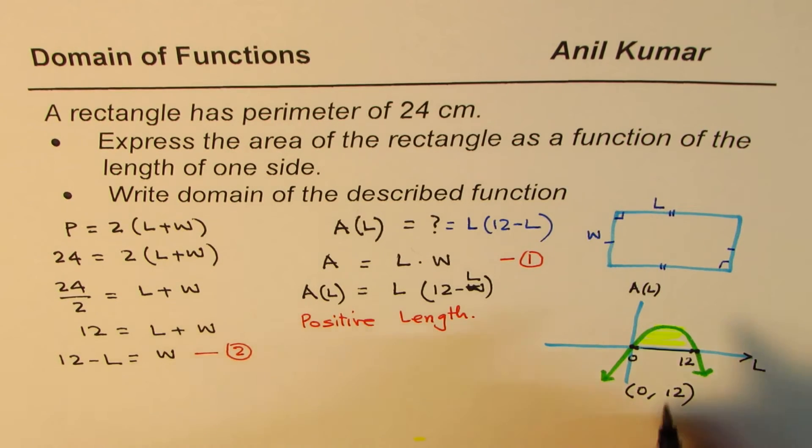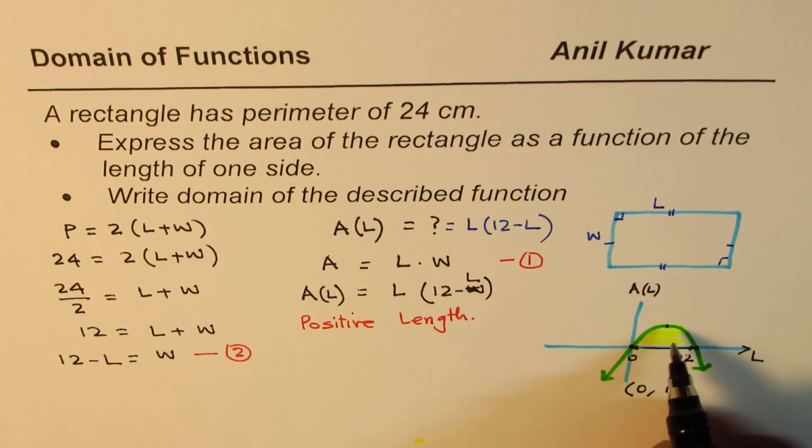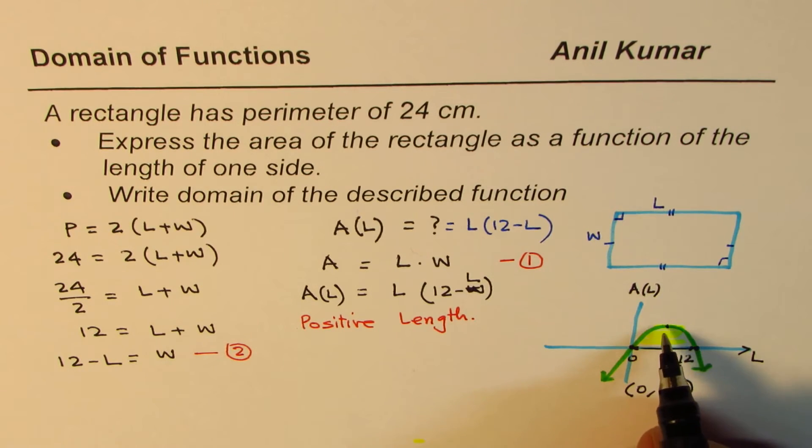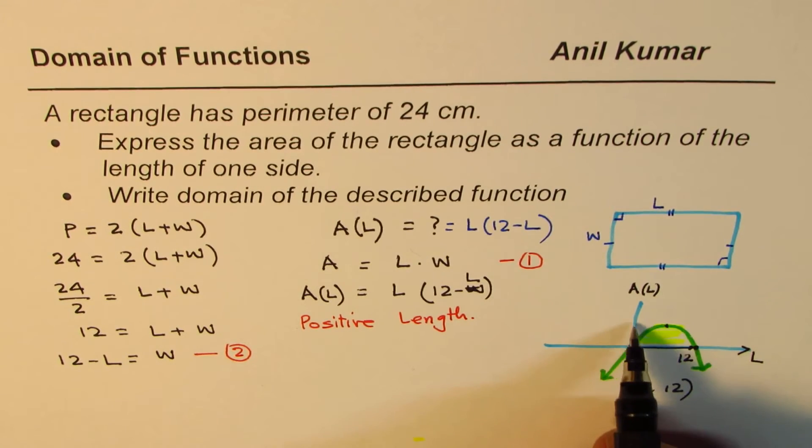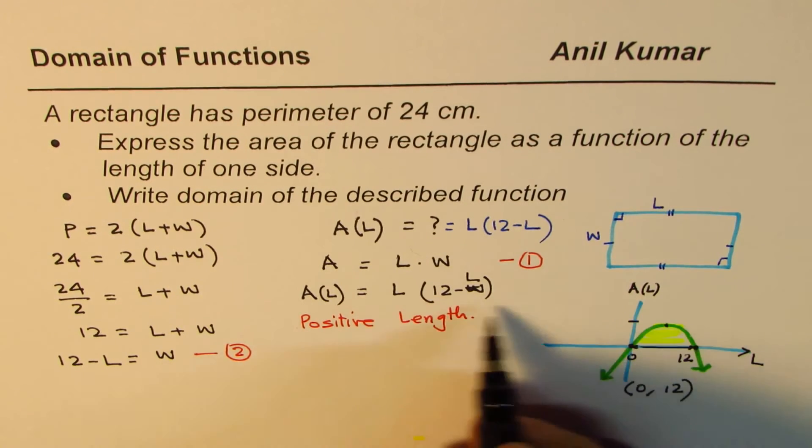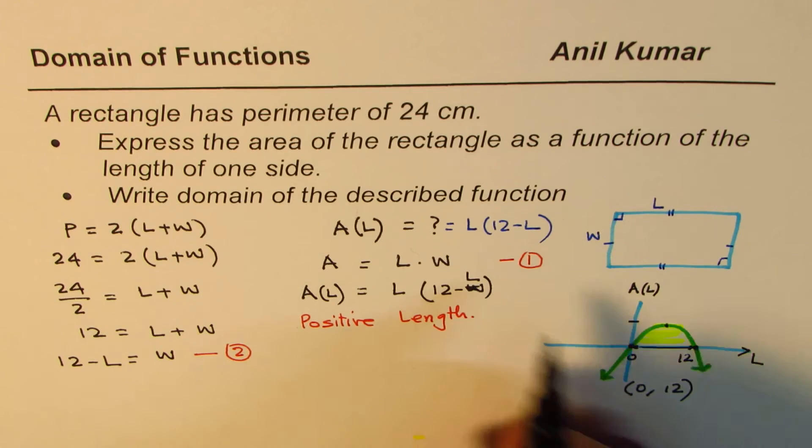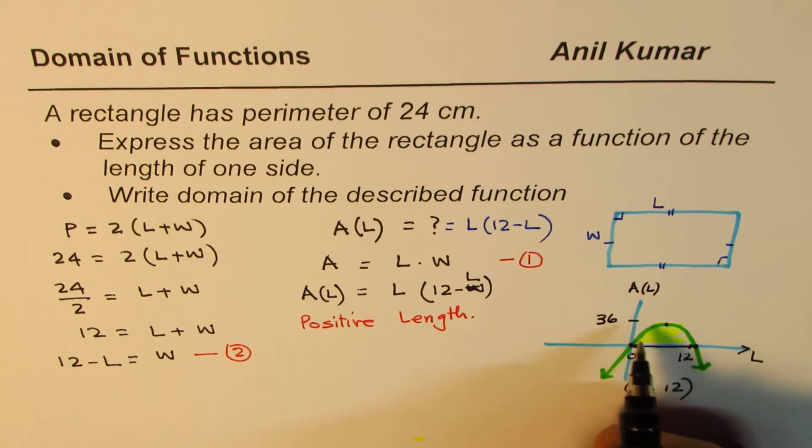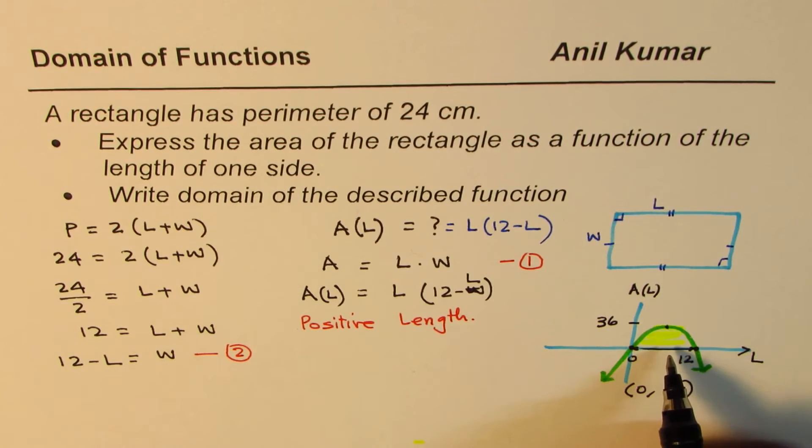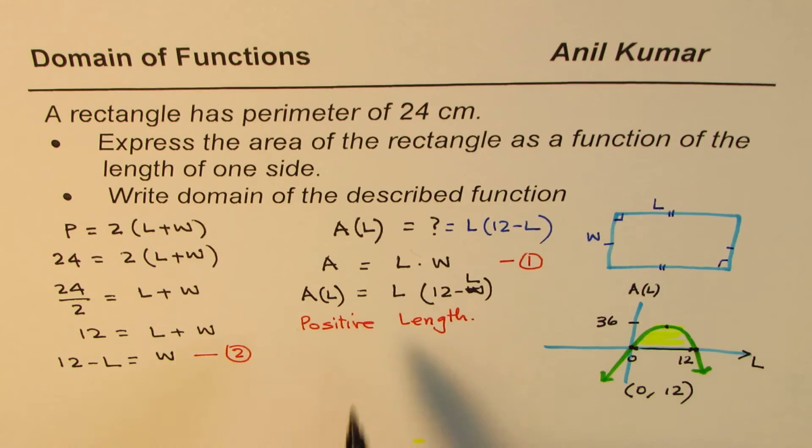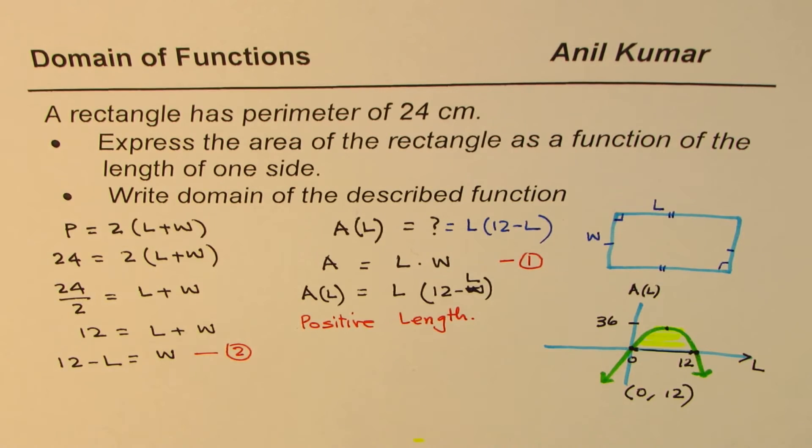We are not looking into range, but at times we are also interested in the range of values. So you can find the maximum by placing 6 here. If I place 6 here, I get 6 times 12 minus 6 is also 6, so we get 36. So the range will be from 0 to 36.